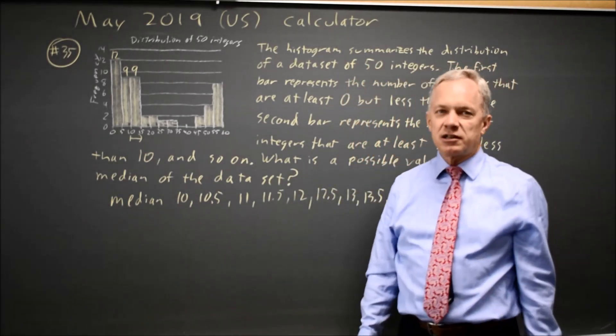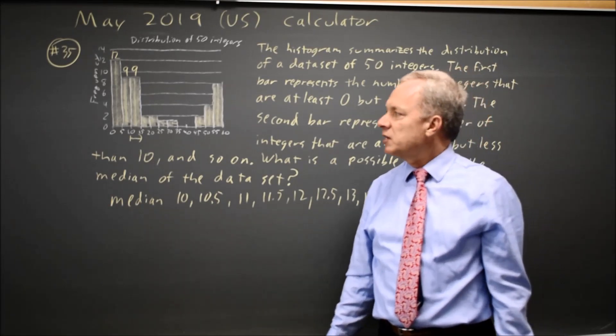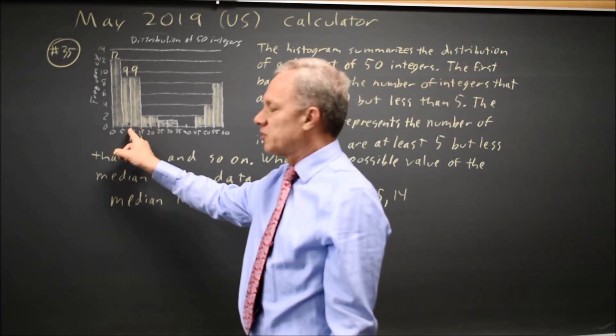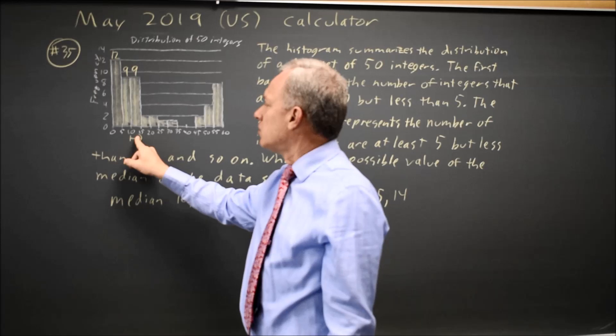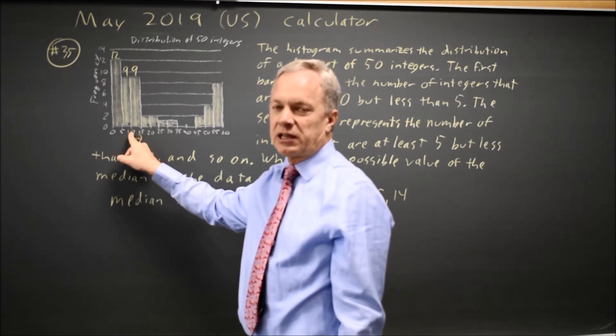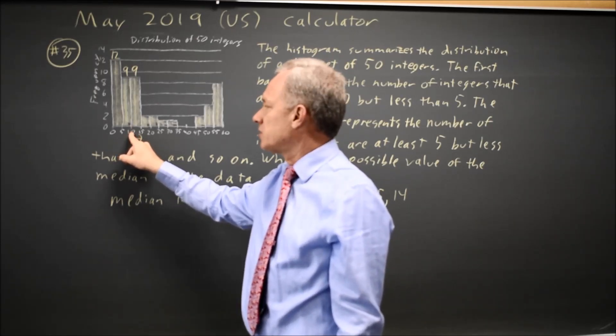The median could not be 14.5, because the numbers in this interval 10 to 15 are at least 10 and less than 15 if they're 10, 11, 12, 13, 14.